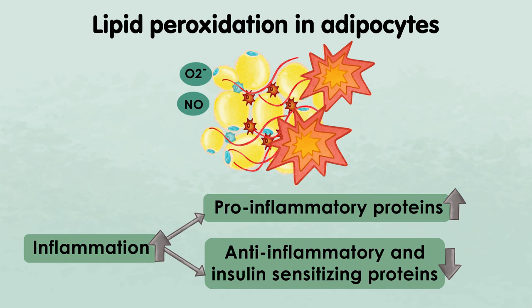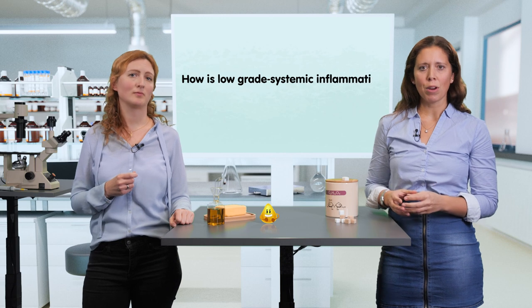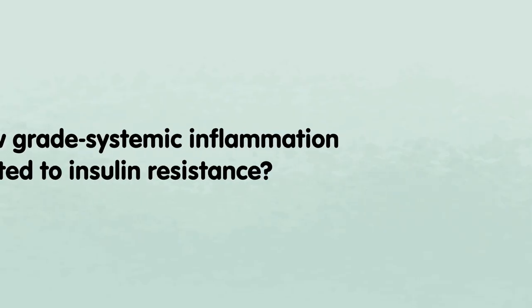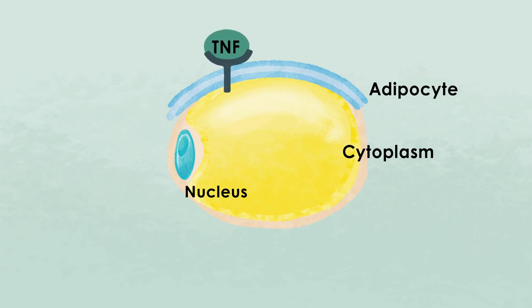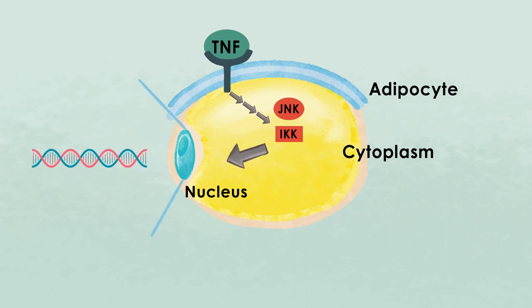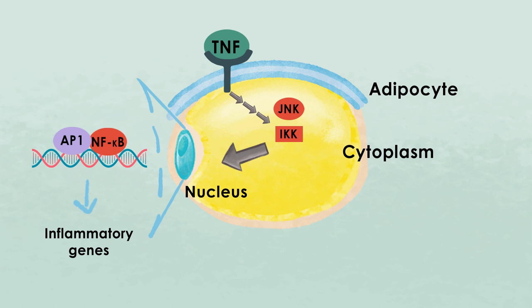Here we want to mention interleukin-10 and adiponectin as key anti-inflammatory proteins. We can ask ourselves: how is low-grade inflammation related to insulin resistance? During the metabolic syndrome, inflammatory mediators such as TNF secreted from the classically activated macrophages bind to receptors present in adipocytes, and trigger an intracellular signaling cascade that leads to the activation of JNK and IKK — the central mediators inside the cells that lead to inhibition of insulin action, thus directly linking the inflammatory response and insulin resistance.